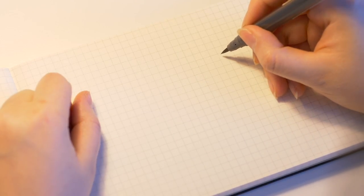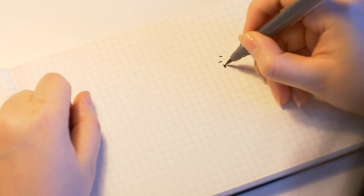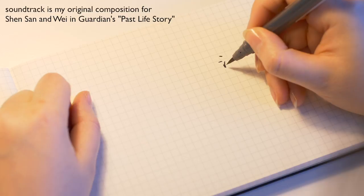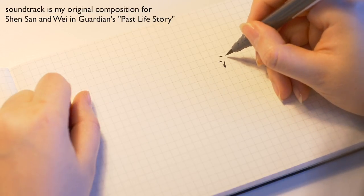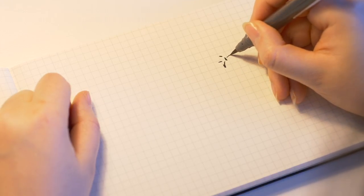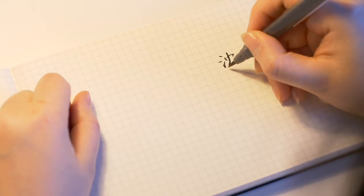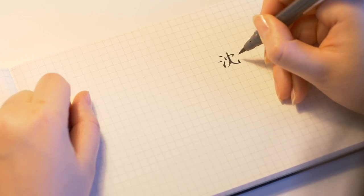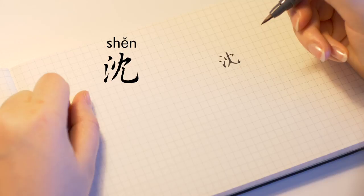Currently now let's start with his surname Shen. On the left part it's the three dot of water. The right part is written in this order. Shen Wei.